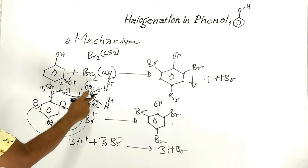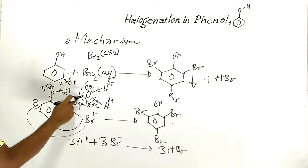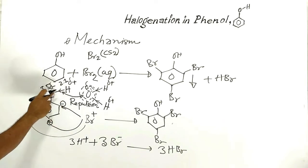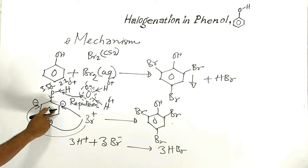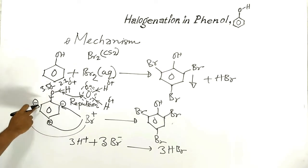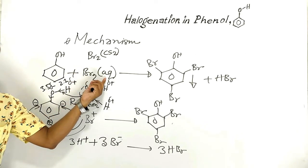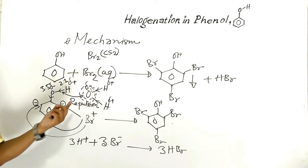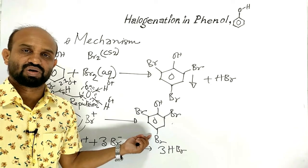In summary, water plays an important role with the hydroxyl group by creating electron-electron repulsion. Because of this repulsion due to the presence of water, the hydroxyl group donates electrons to the benzene ring in a higher amount. Electron density increases at ortho and para positions, and reactivity increases in phenol when bromine solution in water is used. Because of this higher reactivity, 2,4,6-tribromophenol is produced.